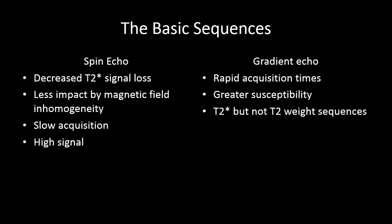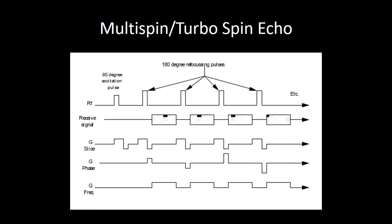To review, the spin echo sequence is going to use that 180-degree pulse to refocus your echo. That decreases the amount of signal loss by T2 star effects, and therefore spin echo sequences have less artifacts and less signal loss related to magnetic field inhomogeneity. Spin echo sequences in general require longer acquisition times, but they generate high signal with less artifact. Gradient echo sequences, because they do not require multiple RF pulses, can have very short TRs and very short TEs. But since they do not have the 180-degree pulse that eliminates the T2 star effects, you do get rapid dephasing and greater susceptibility to magnetic field inhomogeneities.